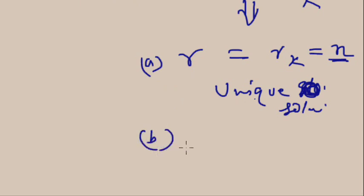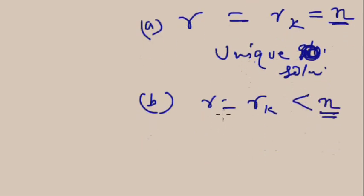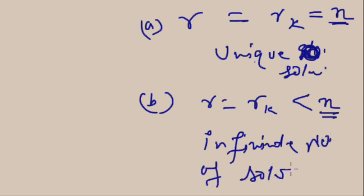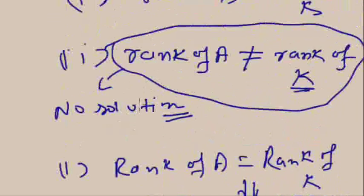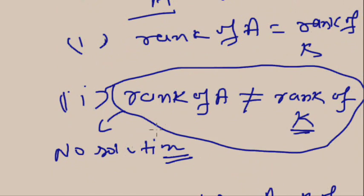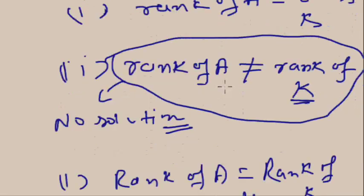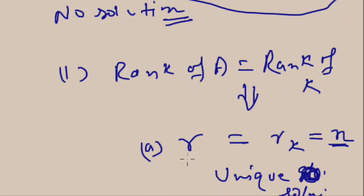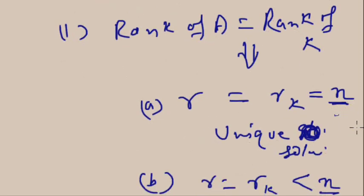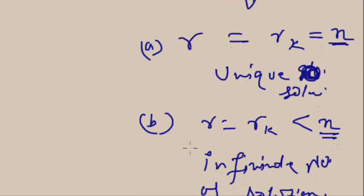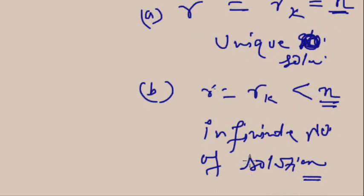The second sub-situation is when rank of A equals rank of K, but this rank is smaller than the number of variables. In that case you will get an infinite number of solutions. So to summarize: if both ranks equal the number of variables, you get a unique solution; if both ranks are equal but smaller than the number of variables, you get infinite solutions. Remember this — questions based on this rule may appear in the GATE exam.